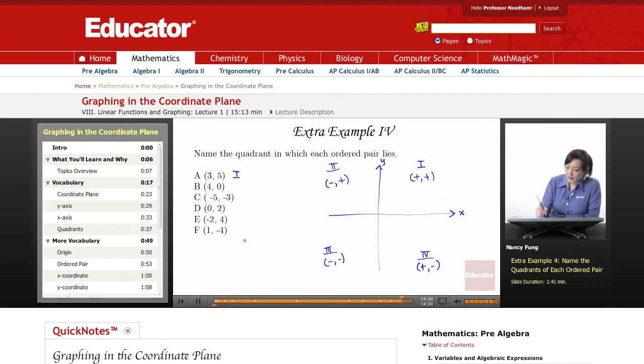(4, 0). Well, it would be over 4 and not up or down. So it's not in a quadrant. In fact, it falls on the x-axis.